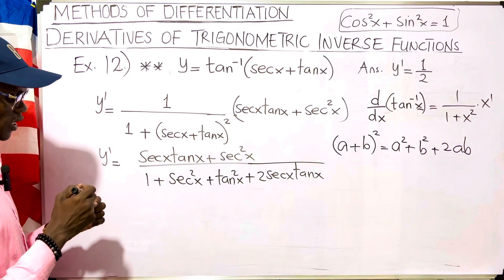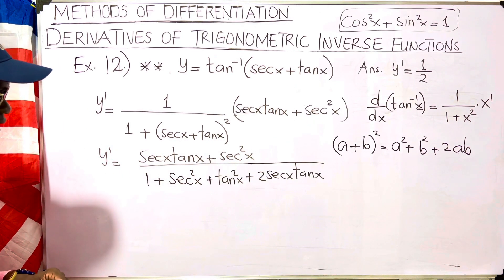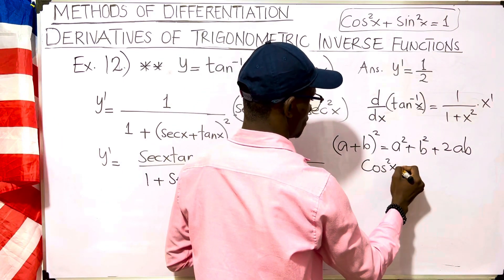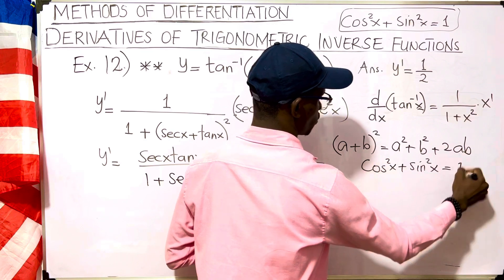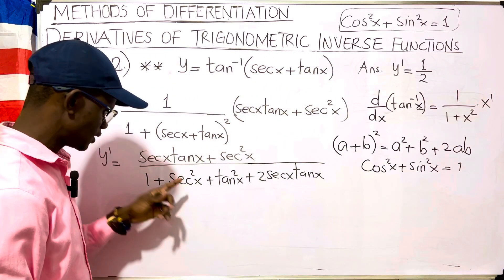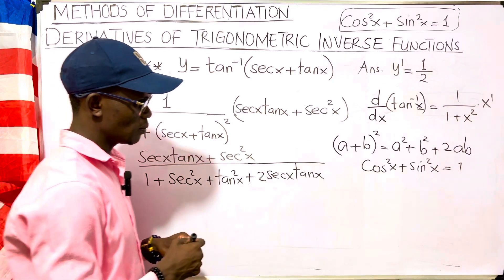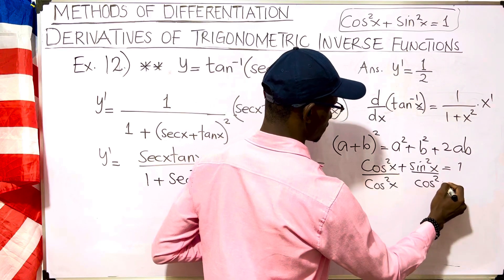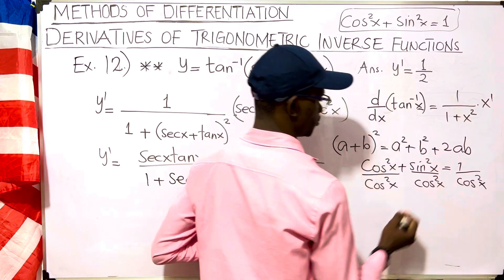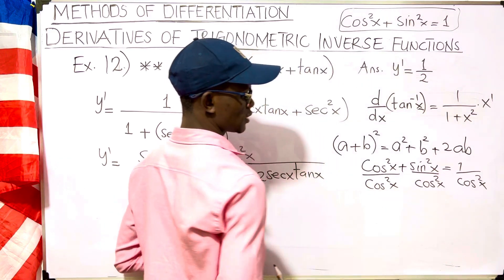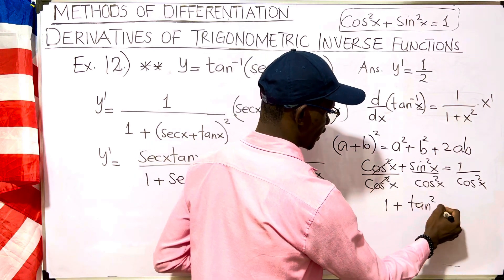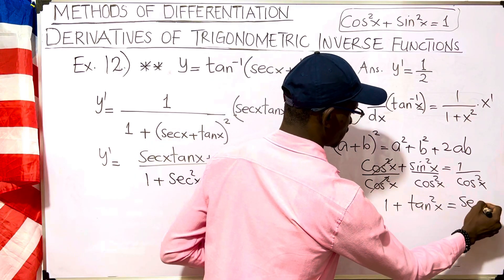We can now bring in some Pythagorean trigonometric identities to simplify further. We know that cos squared x plus sin squared x equals one. If we want secant and tangent, we divide every term by cos squared x, because sin over cos is tangent and one over cos is secant. This gives us 1 plus tangent squared x equals secant squared x.